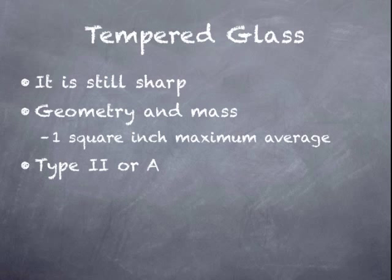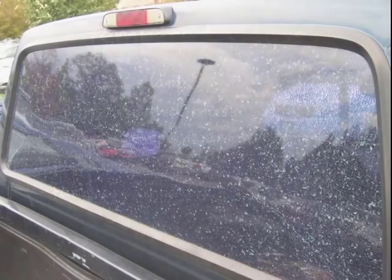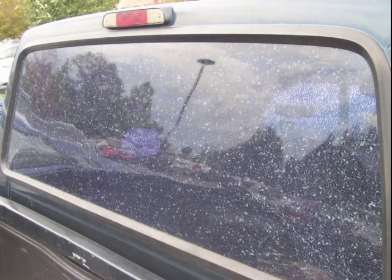Tempered glass does pass the standards for the more stringent testing — the 48-inch drop — so it is more impact resistant. This is an example of tempered glass. The rear window of most vehicles is tempered, and this was what happens when my friend's son hit the back of his truck with a baseball. It broke into a million small pieces of glass.